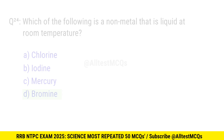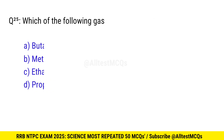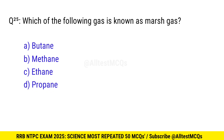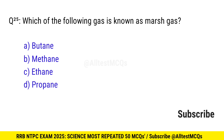Question 25. Which of the following gas is known as marsh gas? Correct option is B, methane.